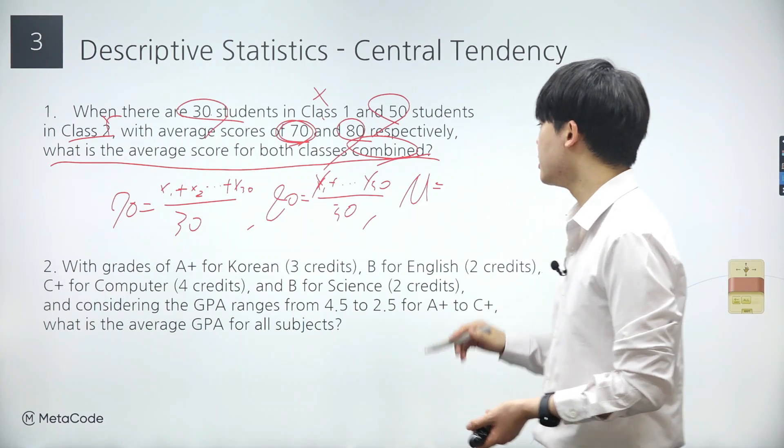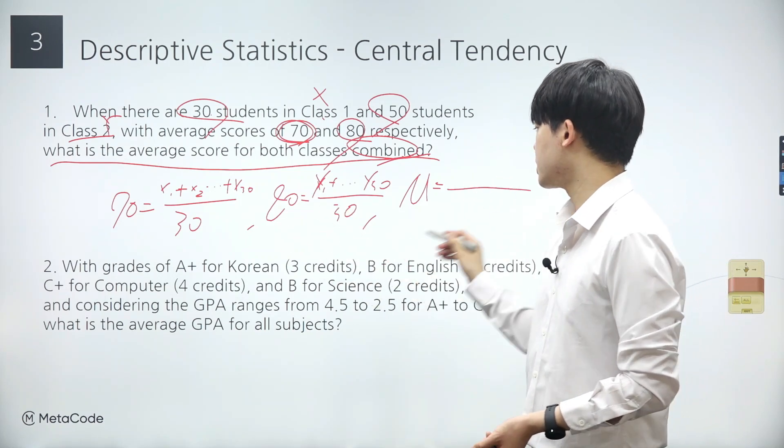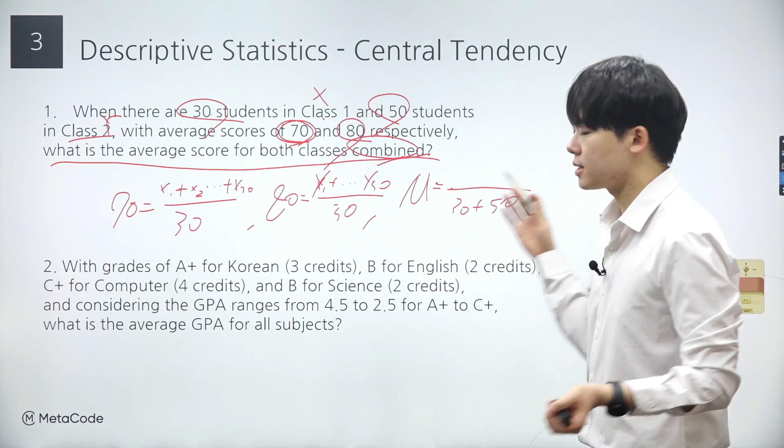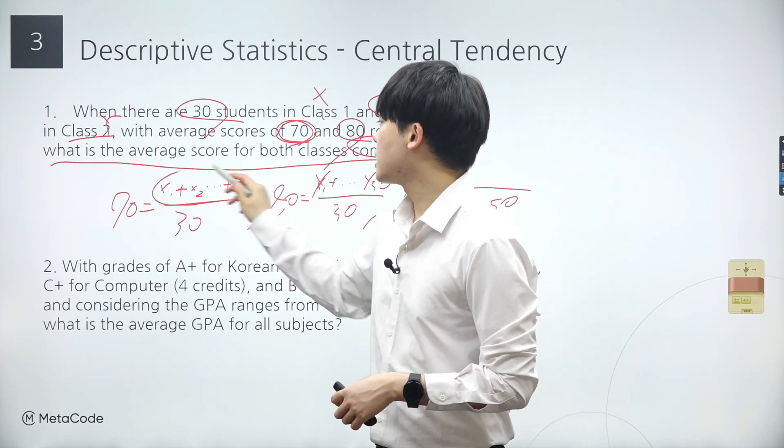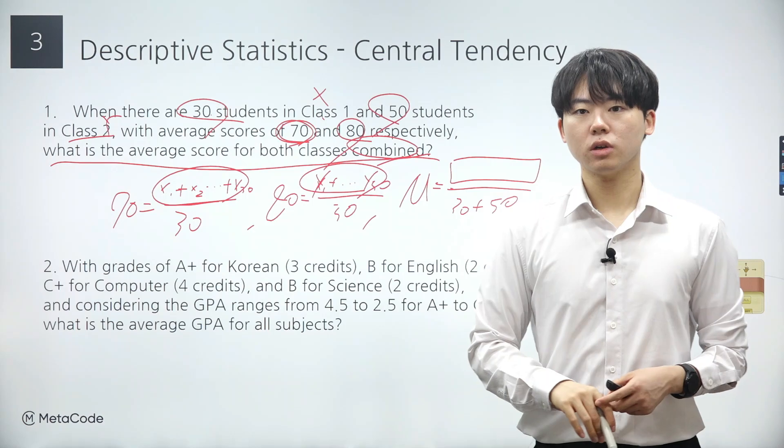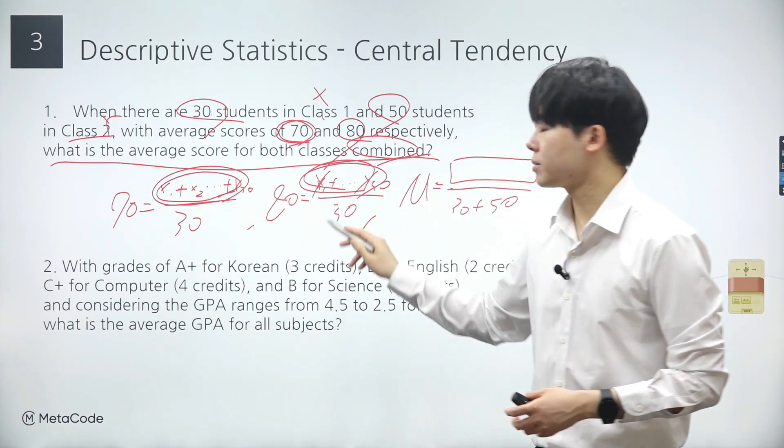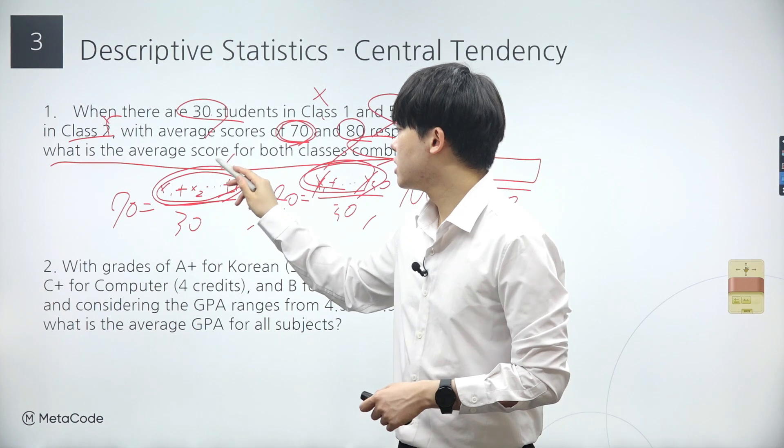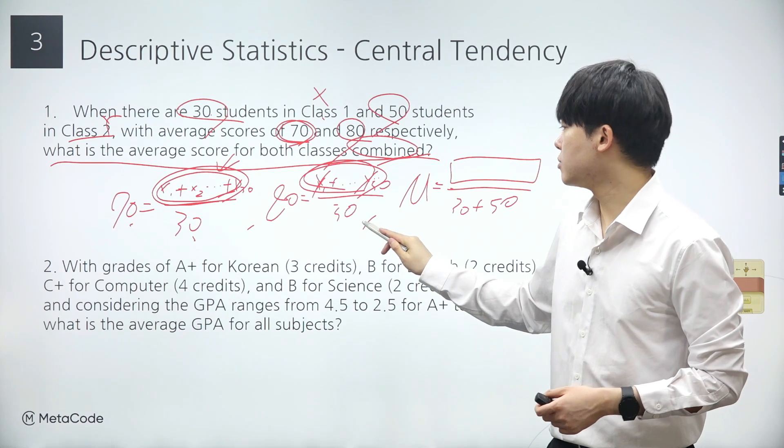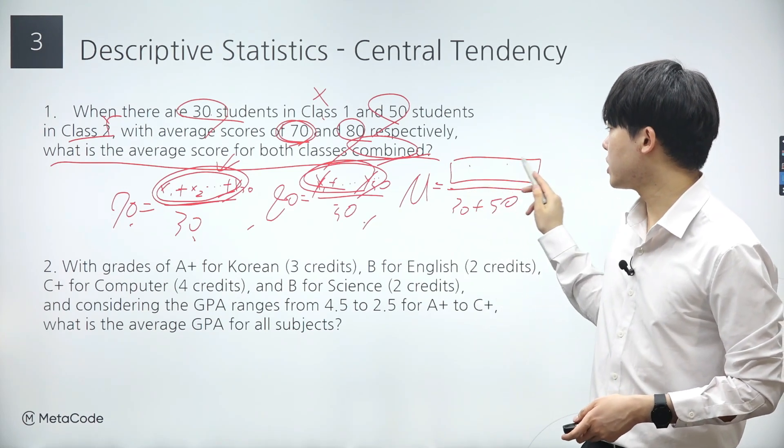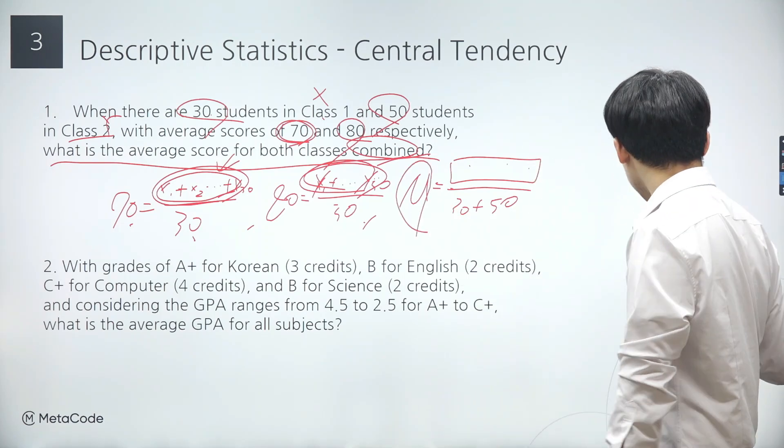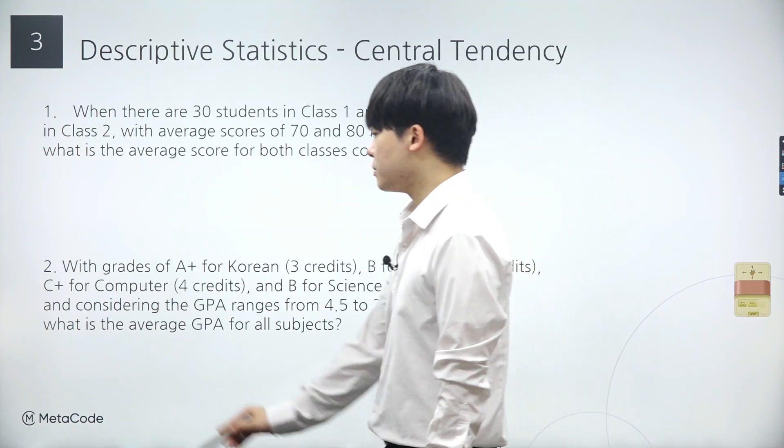Now, how do we calculate the average score for both classes combined? Let's denote the average score for the combined class as mu. The total number of students in both class 1 and class 2 is 30 plus 50, which equals 80. The numerator is the sum of the scores of every individual student in both class 1 and class 2. Hence, the sum of these two values is the numerator for the right-hand side of the equation. Got it? So, how do we calculate the sum of these two values? The sum of x1 to x30 equals 70 times 30, and the sum of y1 to y50 equals 80 times 50. Thus, the numerator equals 70 times 30 plus 80 times 50, and we can calculate the value for mu. For now, we're gonna skip the actual calculation.